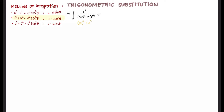We let u = 6x and a = 5, so we let 6x = 5 tangent θ. Therefore x = (5/6) tangent θ. Finding its differential, dx = (5/6) secant² θ dθ. Since this is substitution, our original variable is x and we are introducing a new variable θ, so we must replace all x variables in terms of θ.